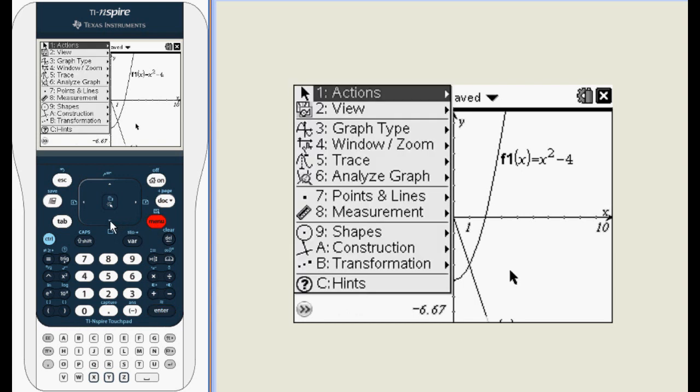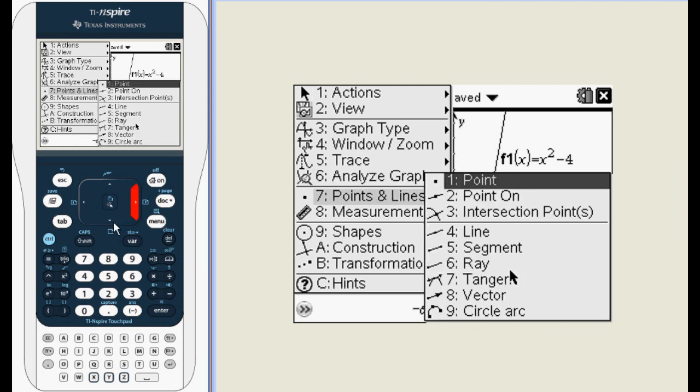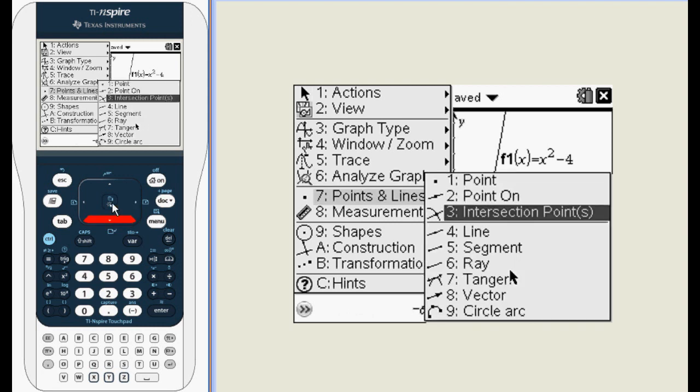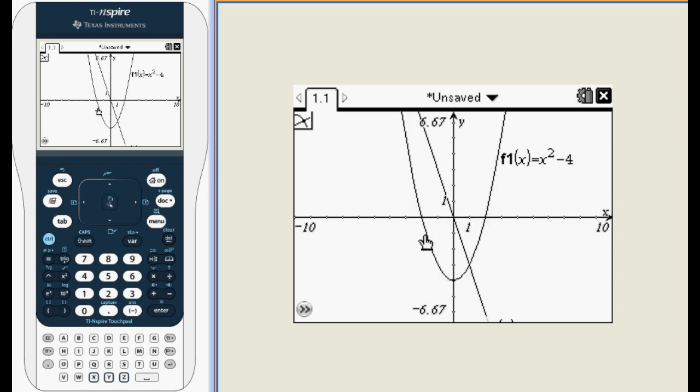To find the intersection points, press menu and go to points and lines. Select intersection points. Now you'll just need to select which functions you are trying to find the intersection of. In this case we've got only two on the screen, so just move the pointer over each one and click on it.